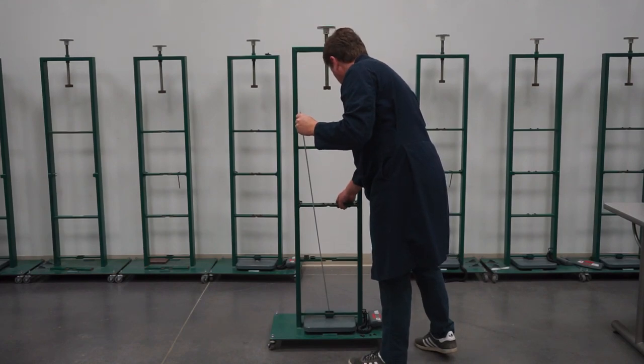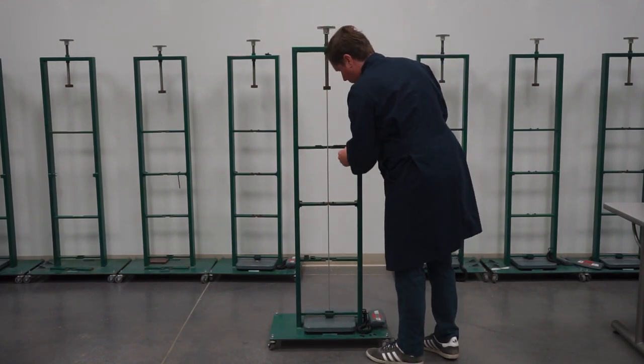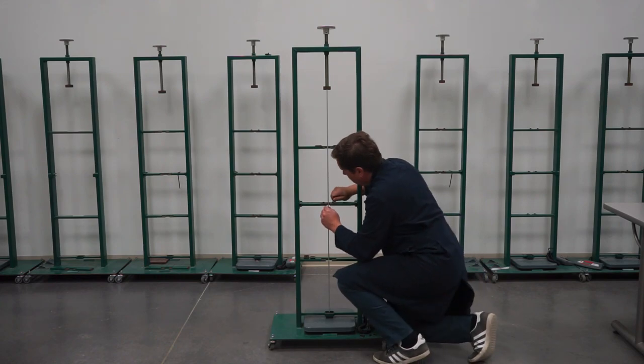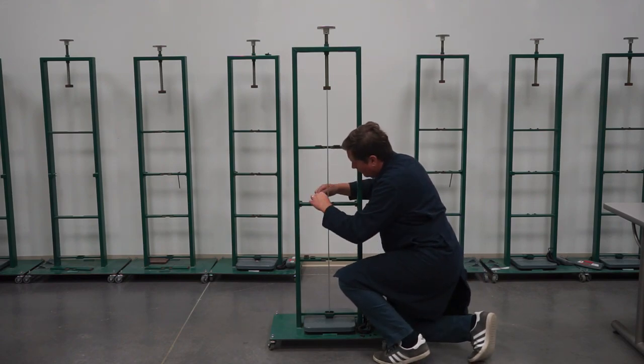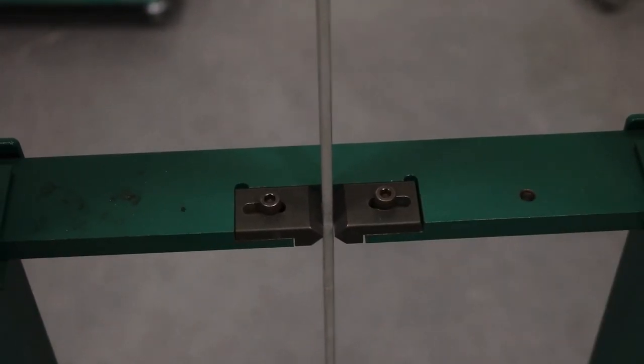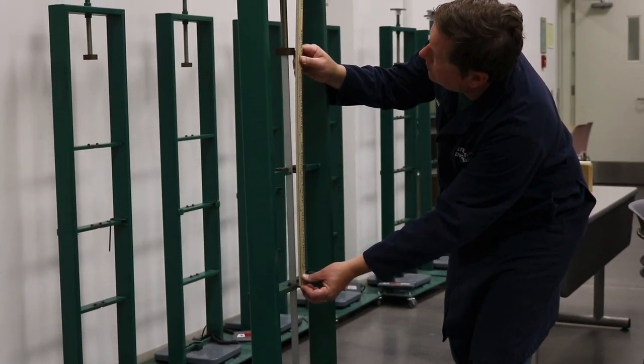Put in place the lateral supports at mid-height, and adjust the knife edges so that they touch the column lightly on each side. Measure the distance from the knife edges to the top of the column and to the bottom of the column.